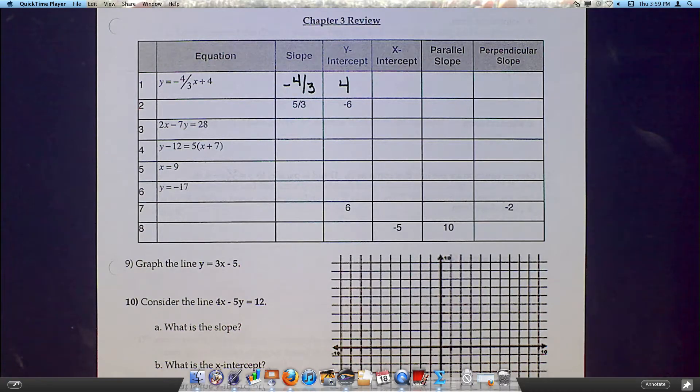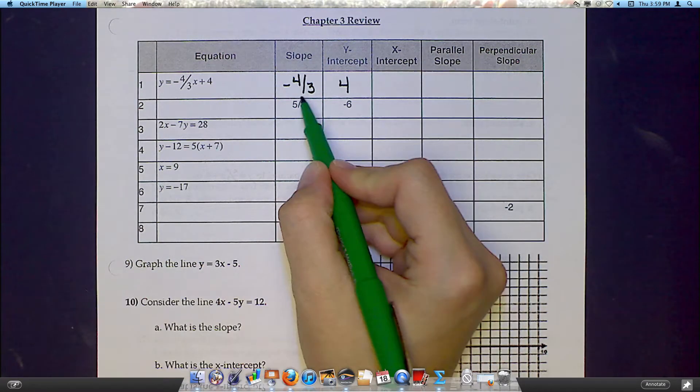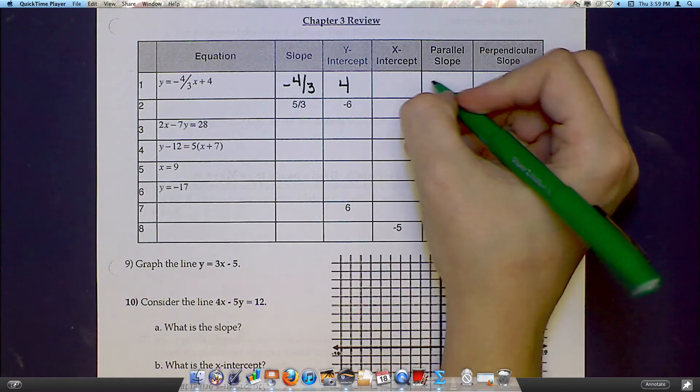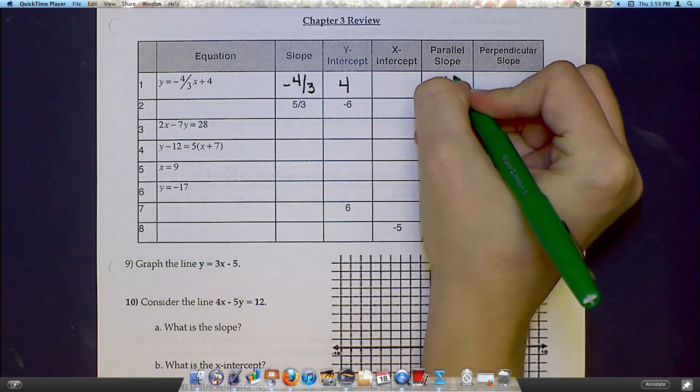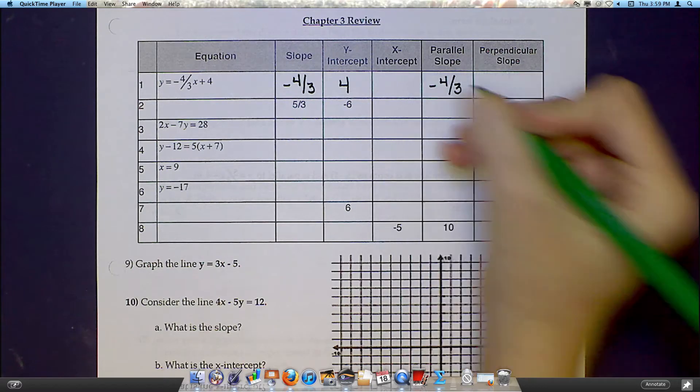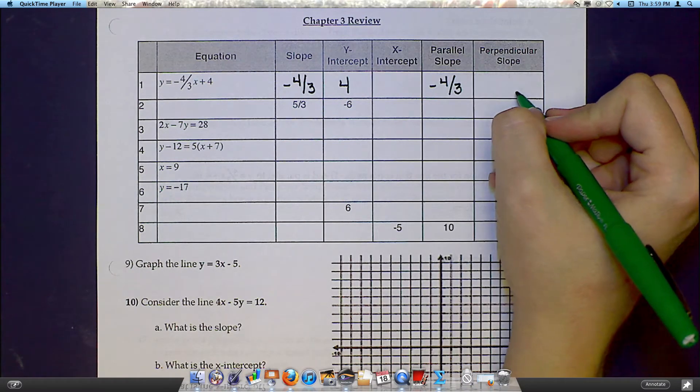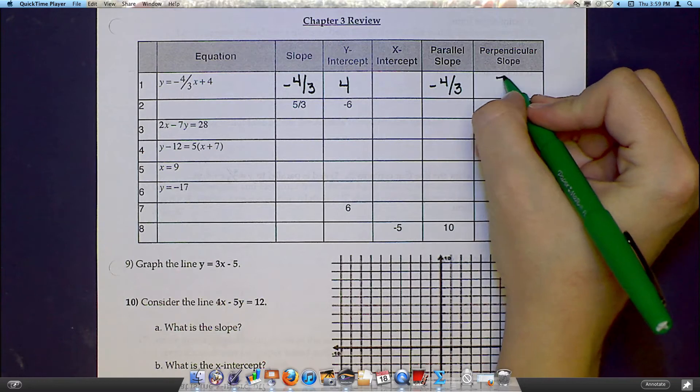Without having to do any more work, that means my parallel slope is also negative 4 thirds, and the perpendicular slope is the opposite reciprocal, so that would be positive 3 over 4.